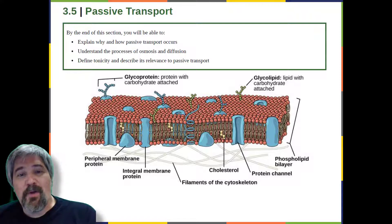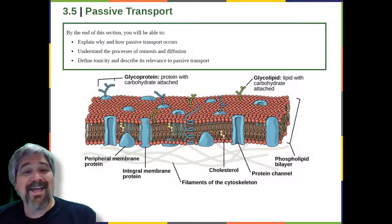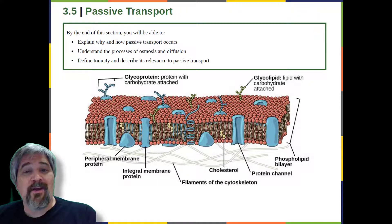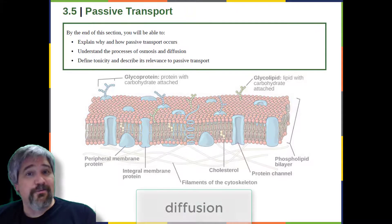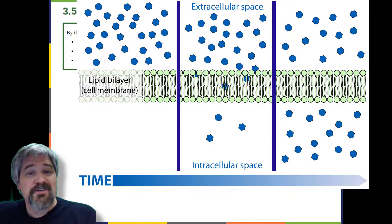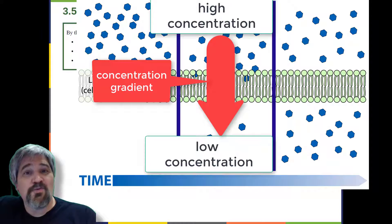The most direct forms of membrane transport are passive. Passive transport is a naturally occurring phenomenon and does not require the cell to expend energy to accomplish the movement. In passive transport, substances move from an area of higher concentration to an area of lower concentration in a process called diffusion. A physical space in which there is a different concentration of a single substance is said to have a concentration gradient.